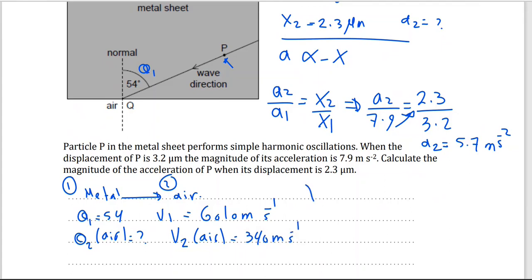So Snell's law, sine theta 2 divided by sine theta 1. Theta 2, air, second medium. Theta 1, first medium, which is metal. This will equal velocity V2 over V1.